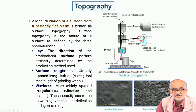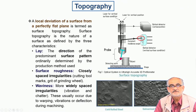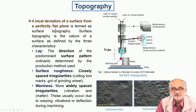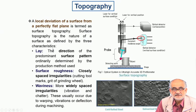Topography essentially is the description of the surface quality in terms of the waviness or various kinds of asperities possible on the surface. There are three characteristic features one generally talks about while describing the topography or topology of the material.